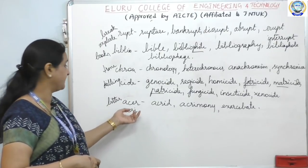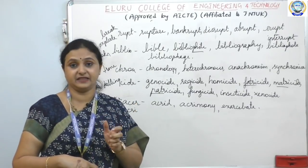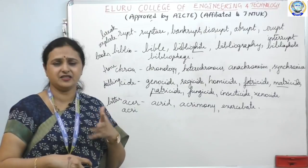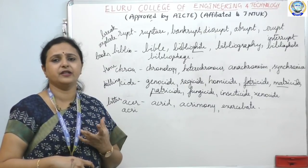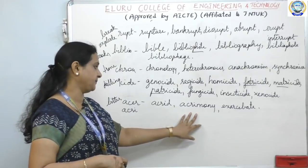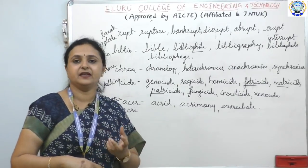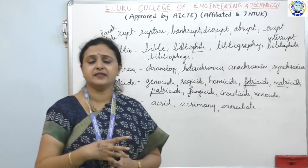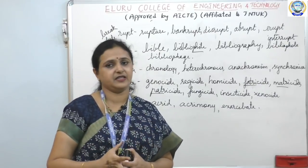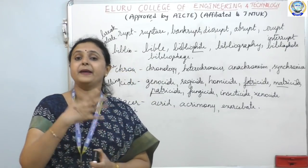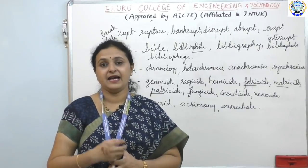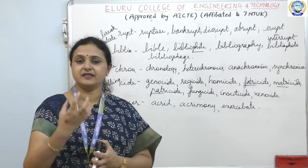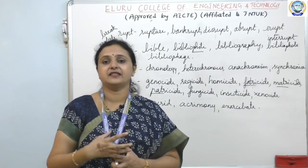Acer or acry means bitter and pungent. Acrid — something that is bitter and pungent, not a very good taste. Acrimony — a bitter feeling. Acerbate — a bad, bitter situation. So while ben means good and mal means bad, acer or acry also means bad. Phil means something that you love.